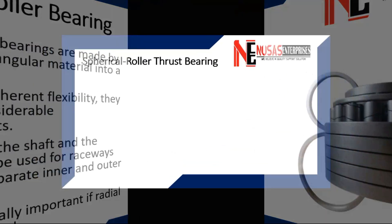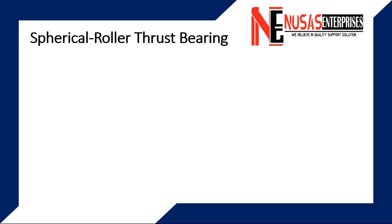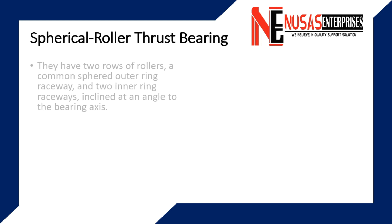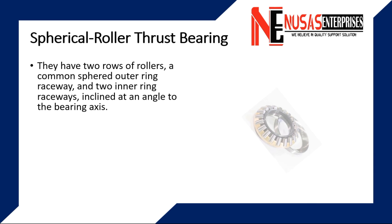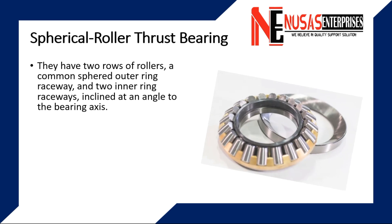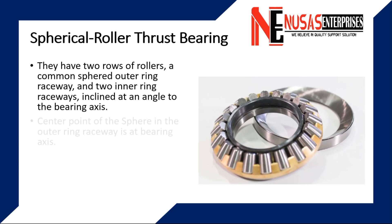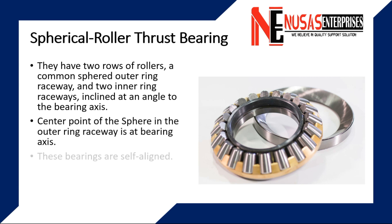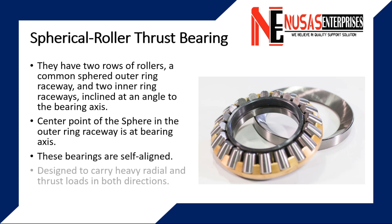Spherical roller thrust bearings have two rows of rollers, a common sphered outer ring raceway, and two inner ring raceways inclined at an angle to the bearing axis. The center point of the sphere in the outer ring raceway is at the bearing axis; therefore, the bearings are self-aligned. These are designed to carry heavy radial and thrust loads in both directions.